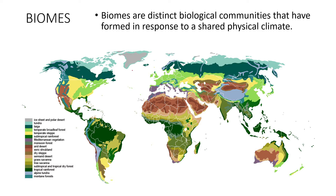Biomes are distinct biological communities that have formed in response to and are structured by the physical climate. Ecosystems function with respect to different ecological factors, but biomes are expanded forms of ecosystems specifically structured with respect to climate. There are multiple types of biomes depending on latitude, available rainfall, temperature, humidity, and other factors which determine which biome occupies a region.